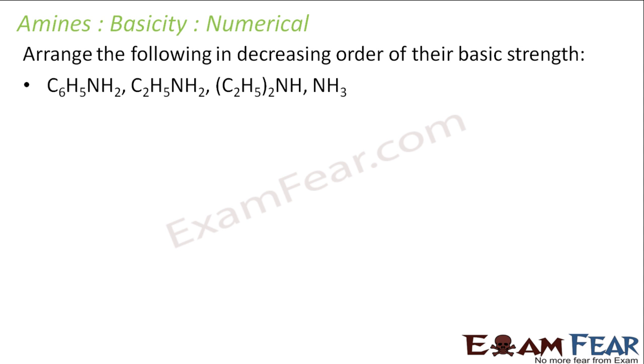Let's take some numericals on the basic nature. We have to arrange the following in the decreasing order of their basic strength. So I have this benzene ring with NH2, benzenamine or aniline. Then I have C2H5 with NH2. Then I have C2H5 and C2H5 and H, and then I have NH3.